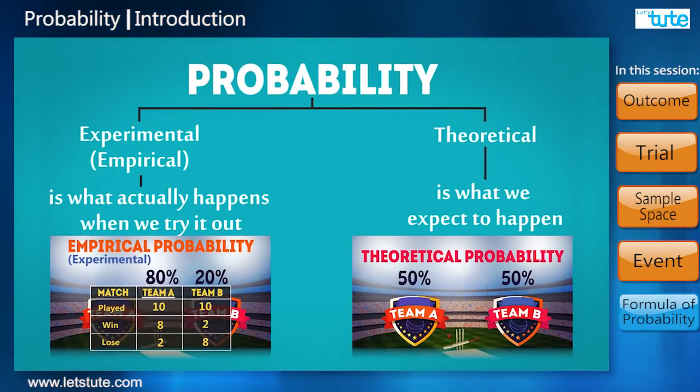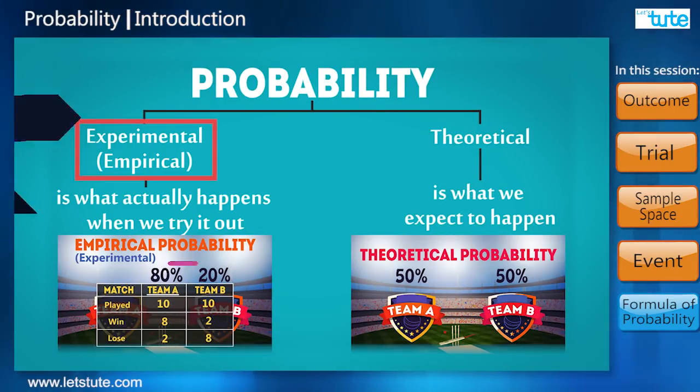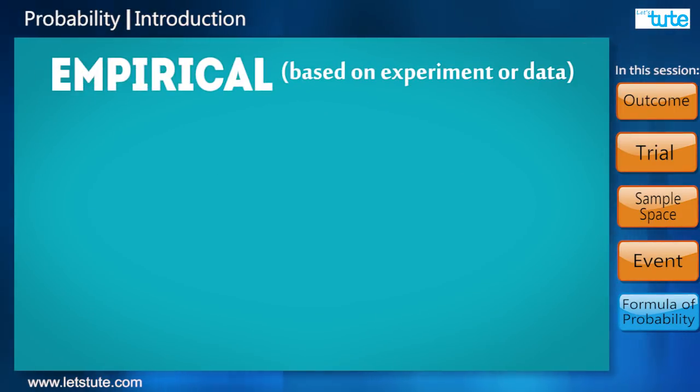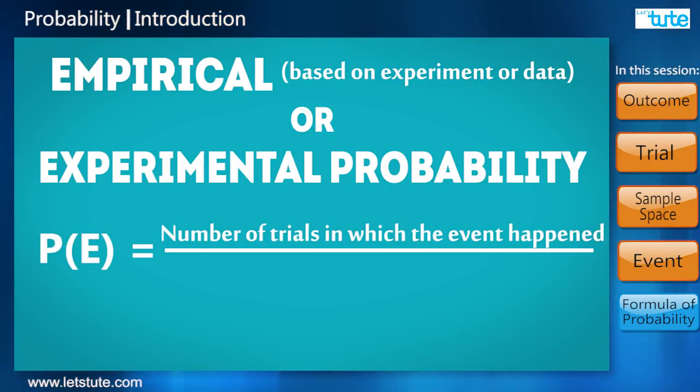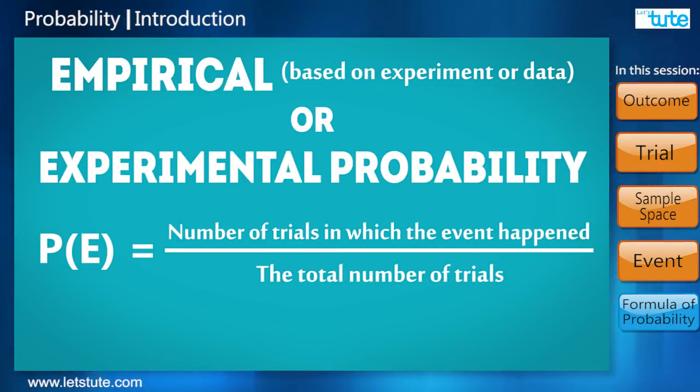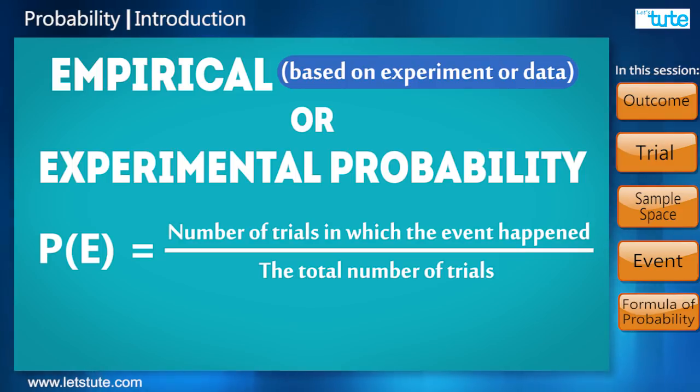In this session, we should learn only how to calculate empirical probability. Empirical or experimental probability is the ratio of the number of times an event occurs to the total number of times the experiment is performed. We call it empirical as the probability we calculate is going to be based on the results of an experiment that was performed.